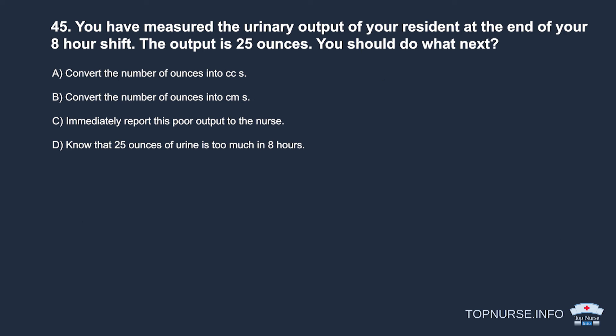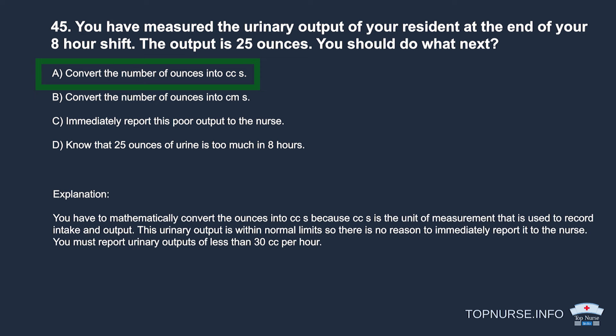Question 45: You have measured the urinary output at the end of your 8-hour shift — the output is 25 ounces. What should you do next? a. Convert ounces into CCs. b. Convert ounces into CMs. c. Immediately report this to the nurse. d. Know that 25 ounces is too much in 8 hours. Correct answer: a. Convert ounces into CCs, because CCs are the unit of measurement used to record intake and output. This output is within normal limits; report outputs of less than 30 CCs per hour.